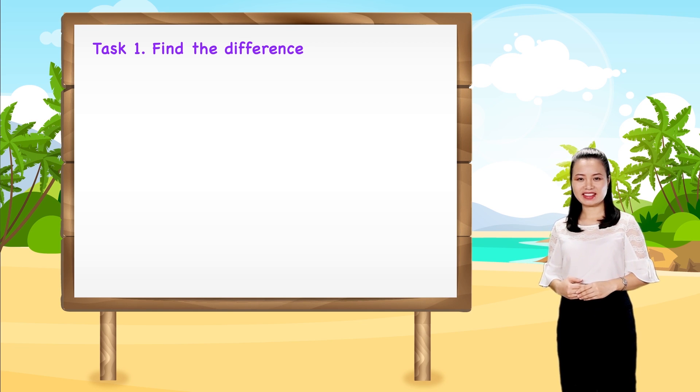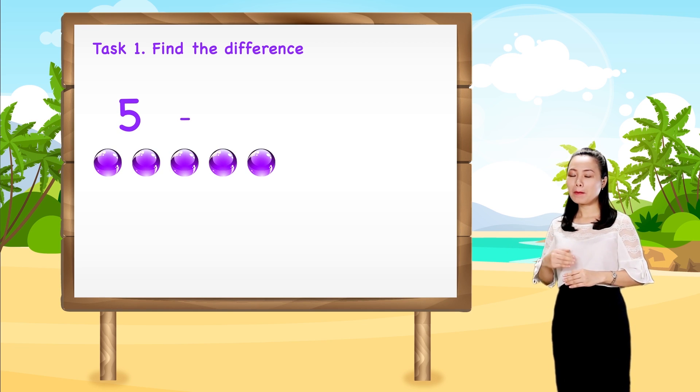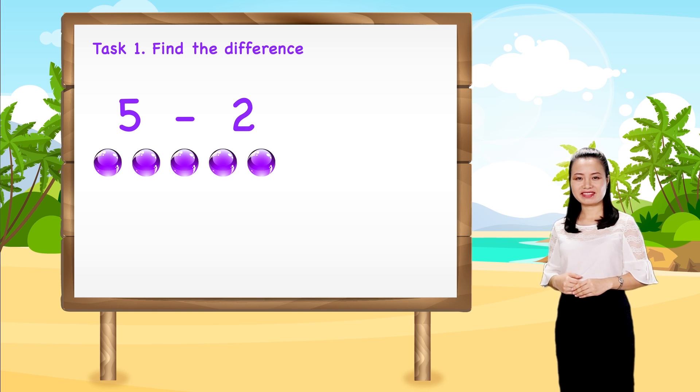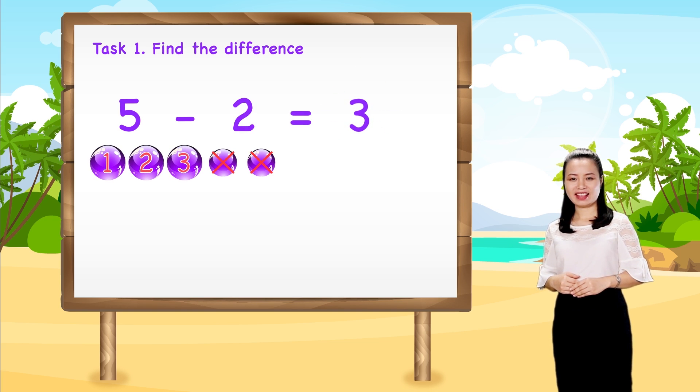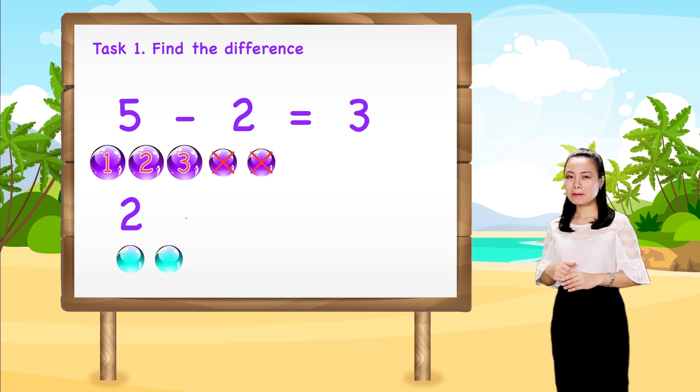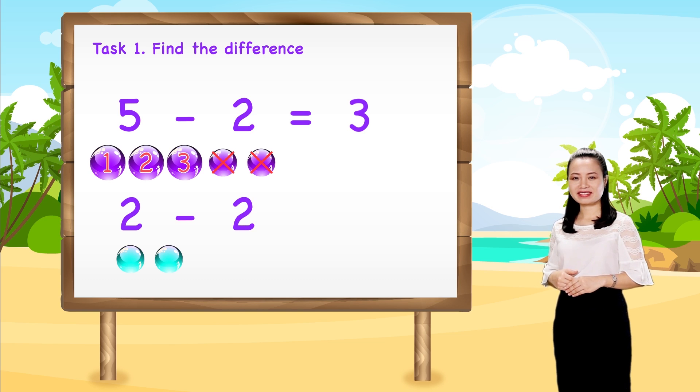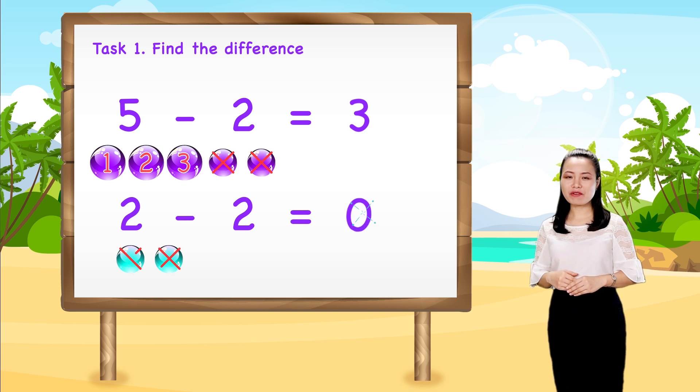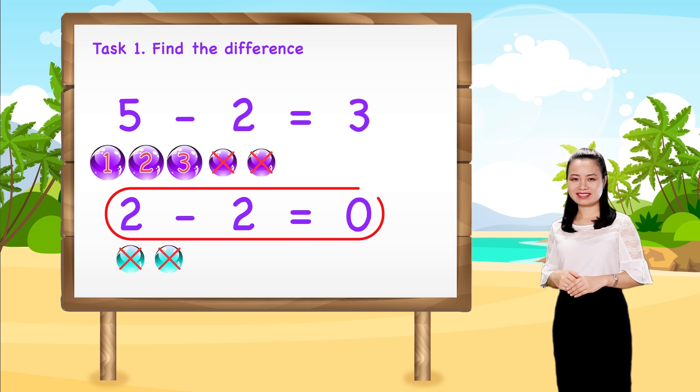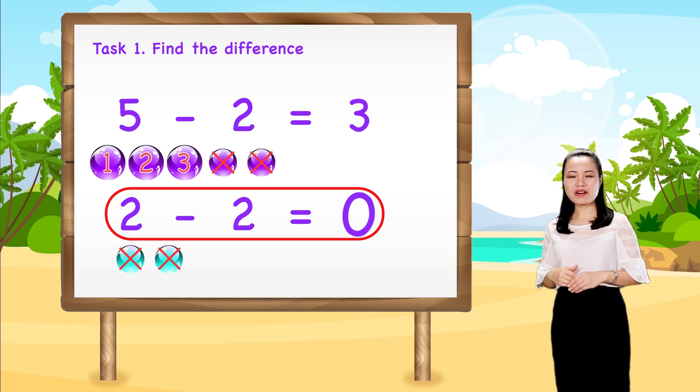Next, 5 minus 2 equals 3. The last one, 2 minus 2 equals 0. Look! A number minus itself equals 0.